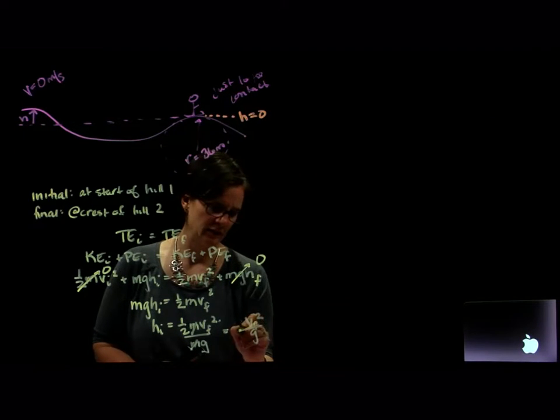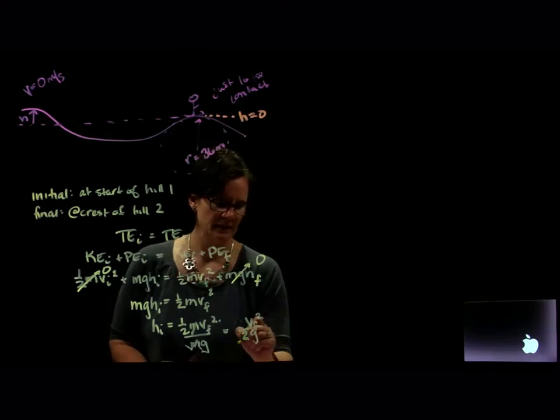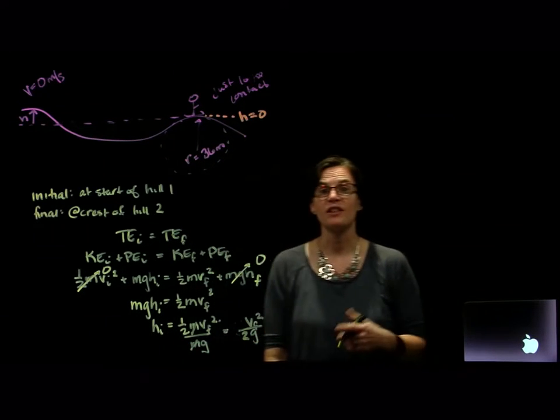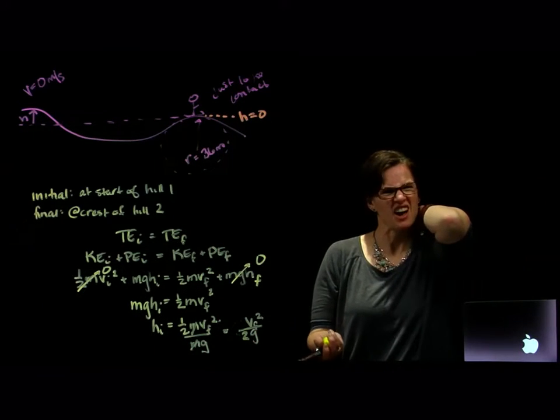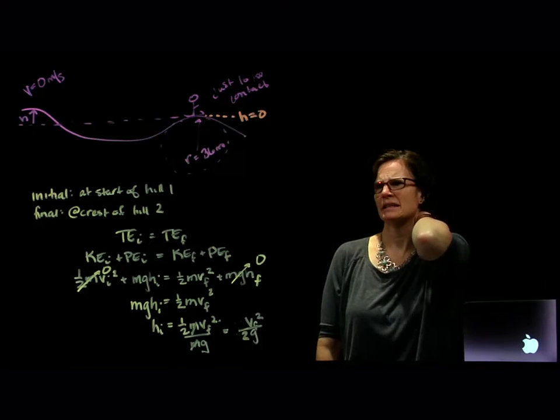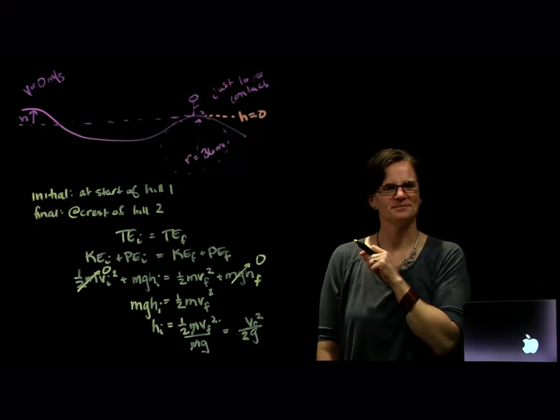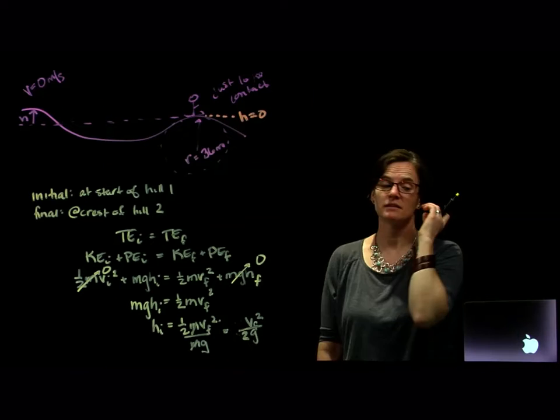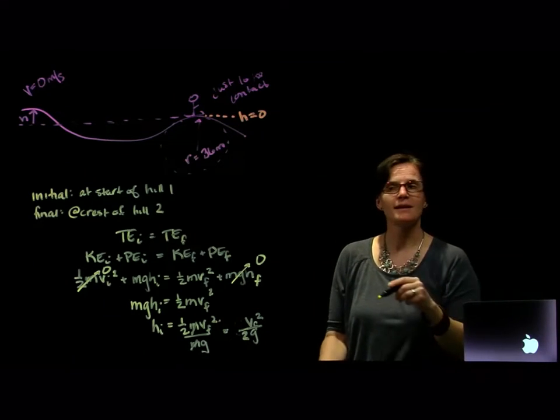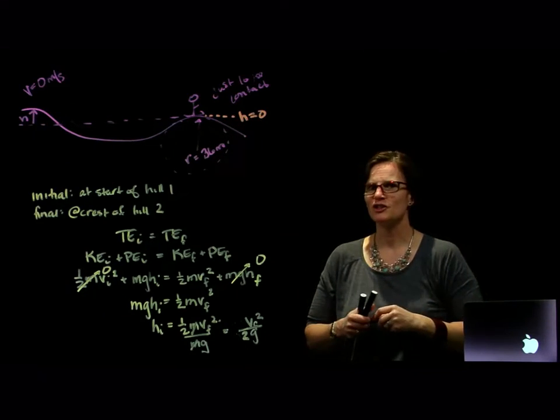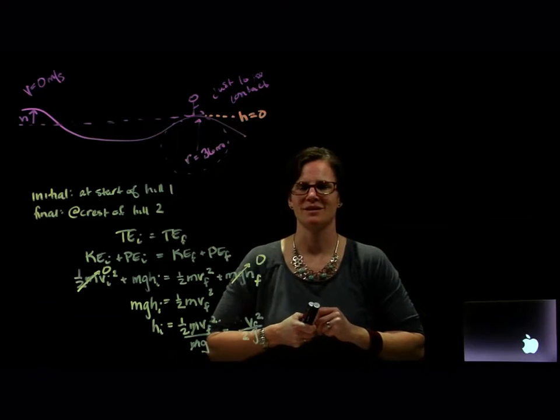So we can just make that look a little better there. So that's my relationship for the height. Well, g is a constant, I know that. I need my final velocity. That's the velocity at the hill, and I'm not given it, but I am told that the skier just loses contact with the hill.